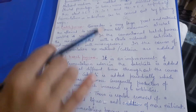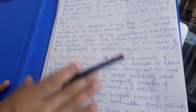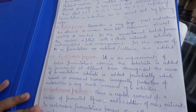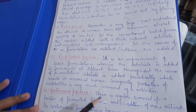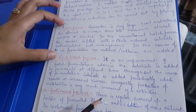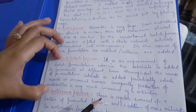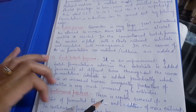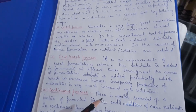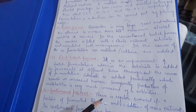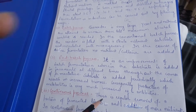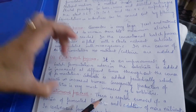Inside the bioreactor we put the nutrient medium from which alcohol will be made, and we add yeast. There are three ways to make alcohol using the bioreactor: batch process, fed-batch process, and continuous process.